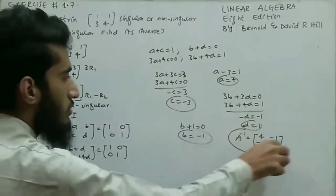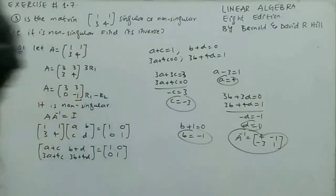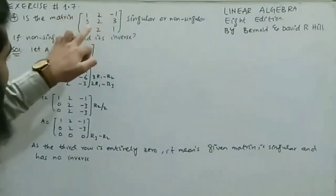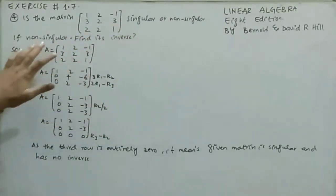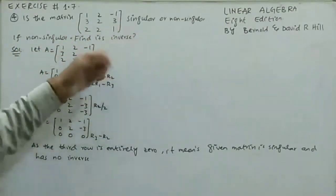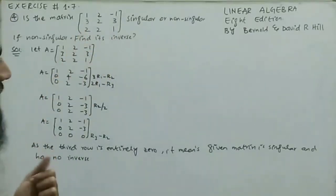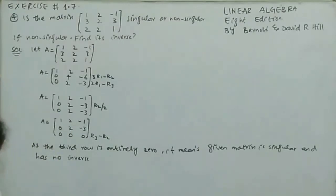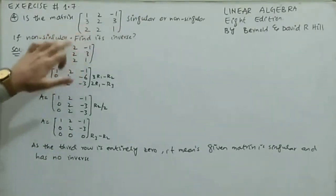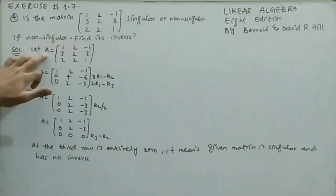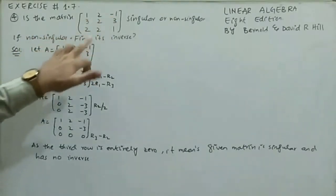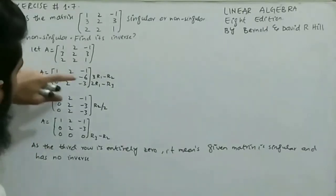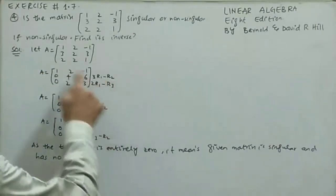Question 4: is the 3×3 matrix A = [1, 2, -1; 3, 2, 3; 2, 2, 1] singular or non-singular? If non-singular, find its inverse. This is the same as question 3 but for a 3×3 order matrix. I will apply the same row echelon form method with two operations: 3R1 - R2 and 2R1 - R3.